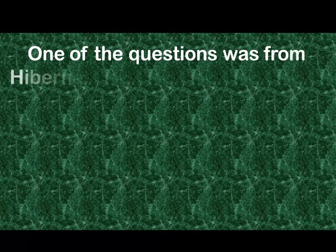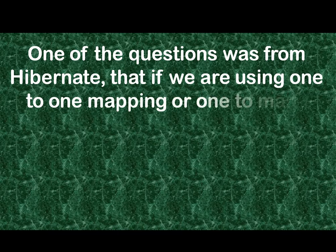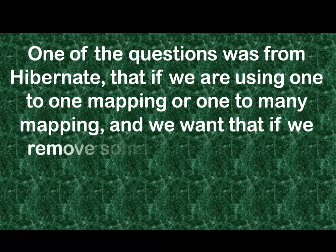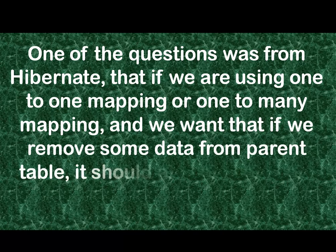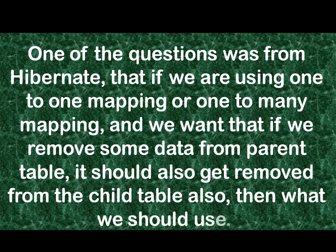The next question was from Hibernate: if you are using one-to-one or one-to-many mapping and you want that when data is removed from the parent table it should also be removed from the child table, what should we use? There is a property called cascade ALL — if we use that, we can achieve this functionality.